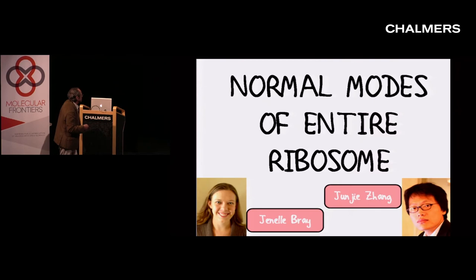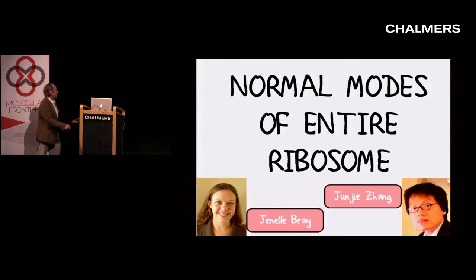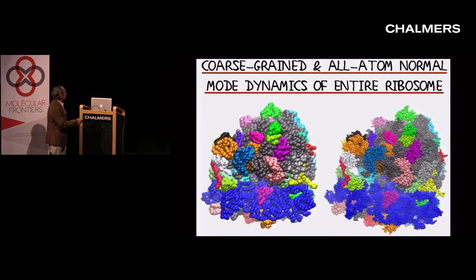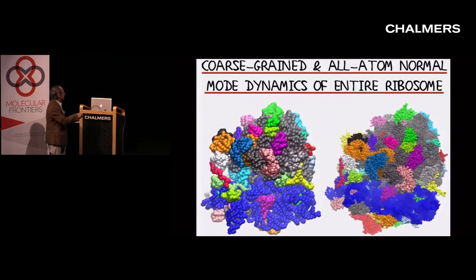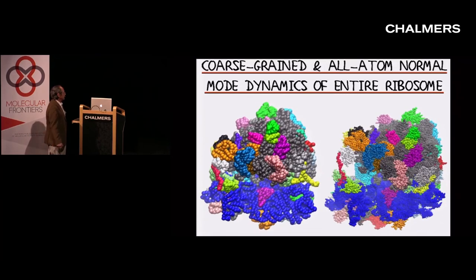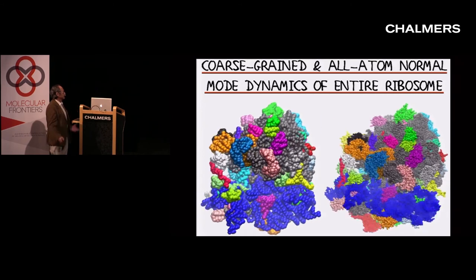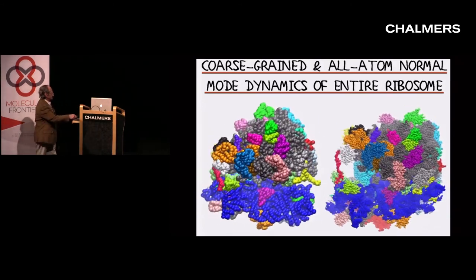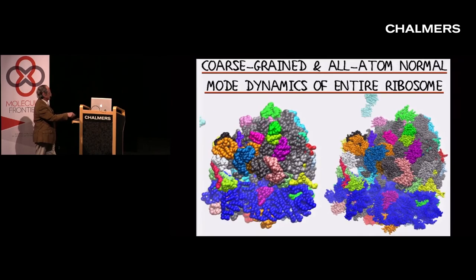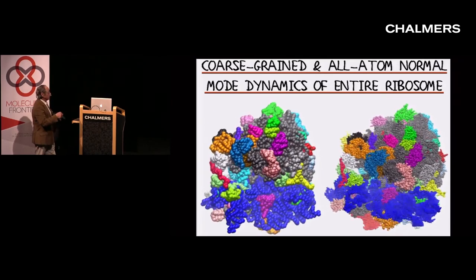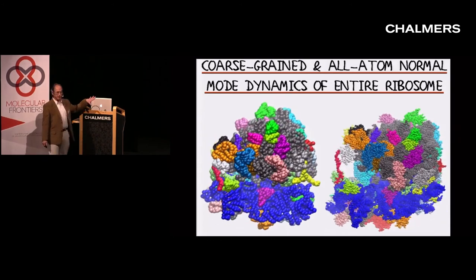Something else we did required much less computer time — it was the normal modes of an entire ribosome, done by ex-postdocs Janelle Bray and Junji Chang. Junji is now an assistant professor at Texas A&M. We just see the structure in a simplified reduced form — coarse grained and with all the atoms. These are very exaggerated movements but at least they show you the kinds of things that this object can do.